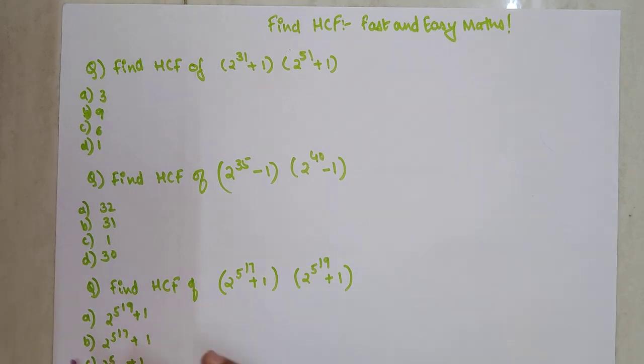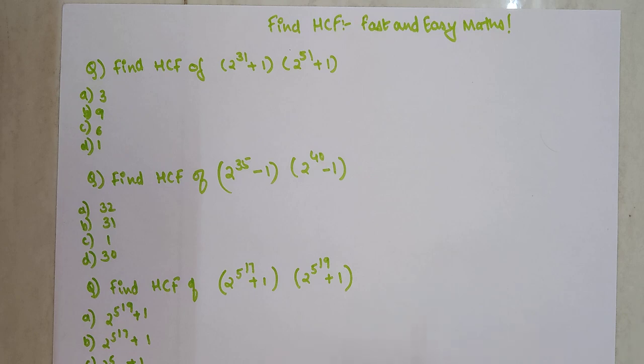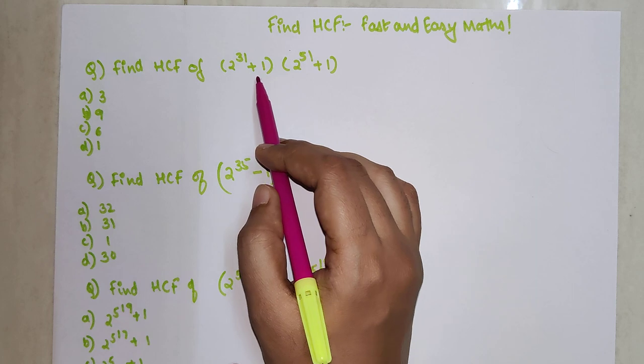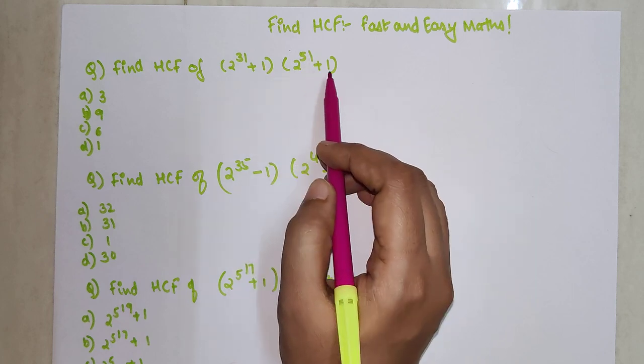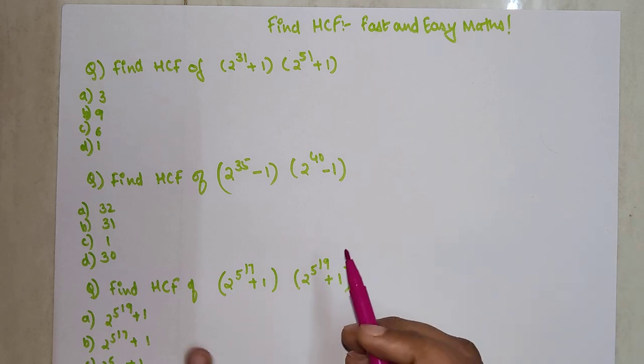I'm going to show you a very simple trick. All you need to do is know how to find the HCF. Here we have 2^31 + 1 and 2^51 + 1, both getting multiplied with each other, and you need to find the HCF.